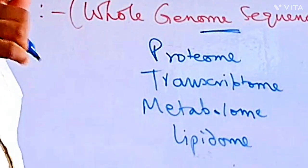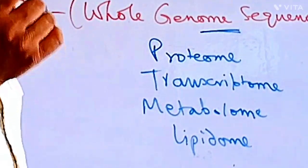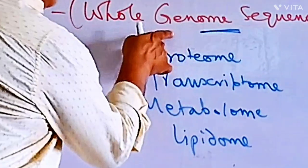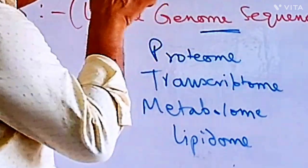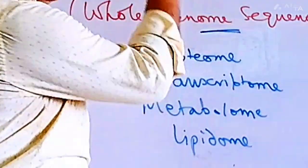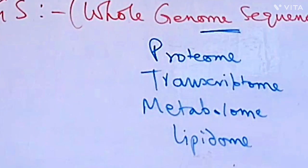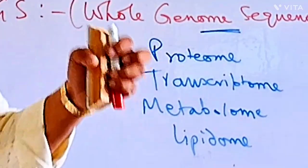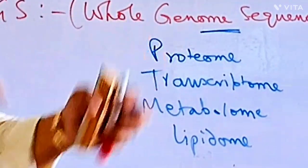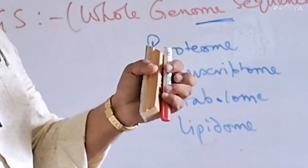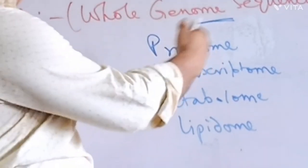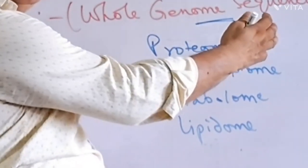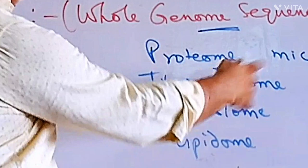The study of the proteome will be called Proteomics. Similarly, if you call it a study, then it will be called Genomics — genomics research, genomics study. That study is about the whole genome. Genome means the whole DNA. Proteome means the total proteins of that organism, and the study is called Proteomics and Transcriptomics.